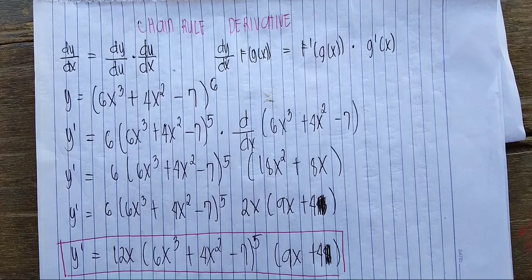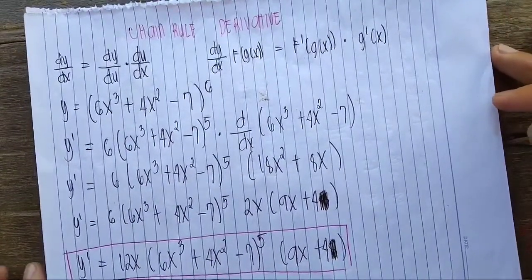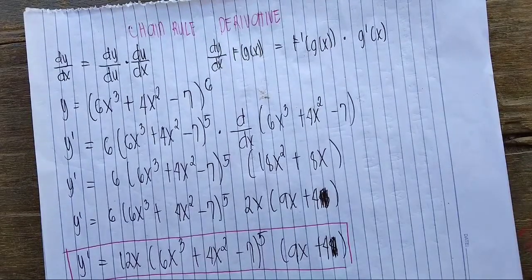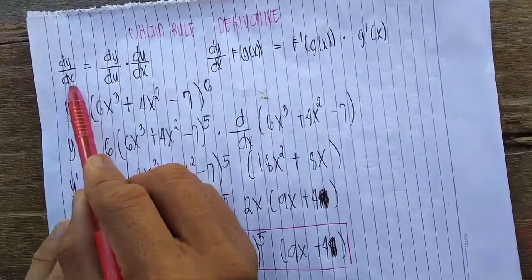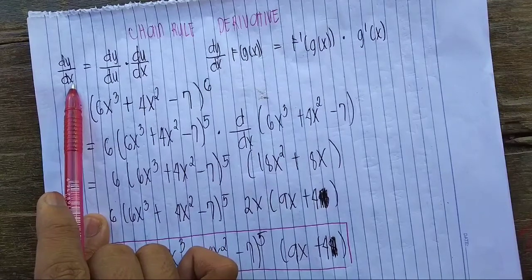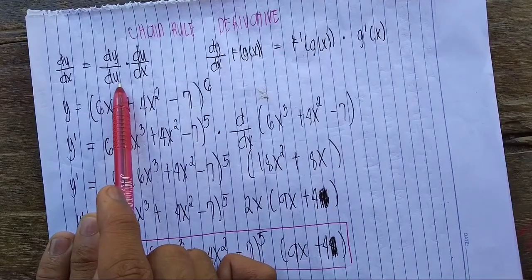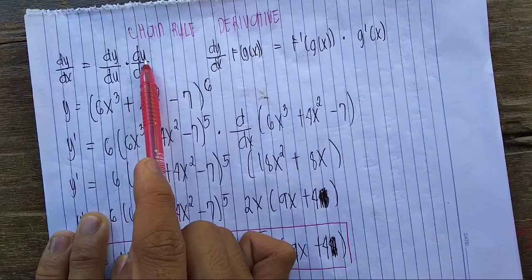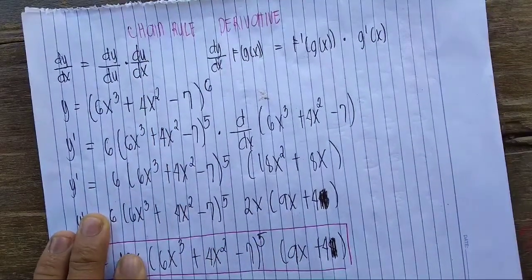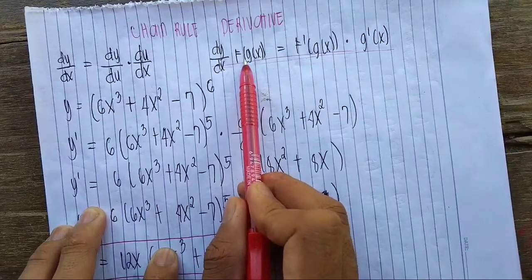Hello, what's up everyone! We are back again to our new tutorial. In this tutorial, we will tackle the chain rule derivative. The general derivative formula is dy/dx — the derivative of y with respect to x — which equals the derivative of y with respect to u, times the derivative of u with respect to x. For a more organized formula: f(g(x)).